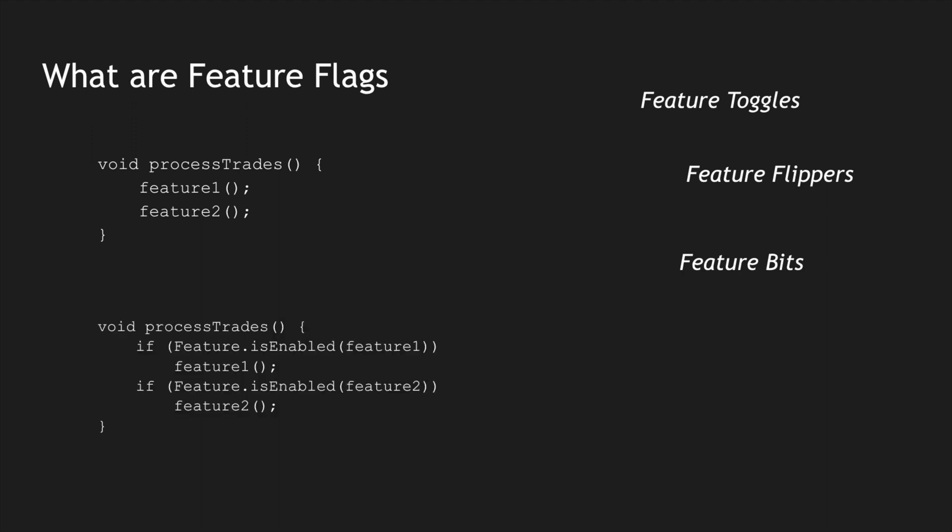In order to enable or disable features, we need a way to manage these toggles. What we generally would do is add an if statement: if feature 1 is enabled, go to the feature 1 method; if feature 2 is enabled, go to feature 2. This categorization — where we identify if a feature is enabled and process it, or skip it if disabled — is called a feature flag.